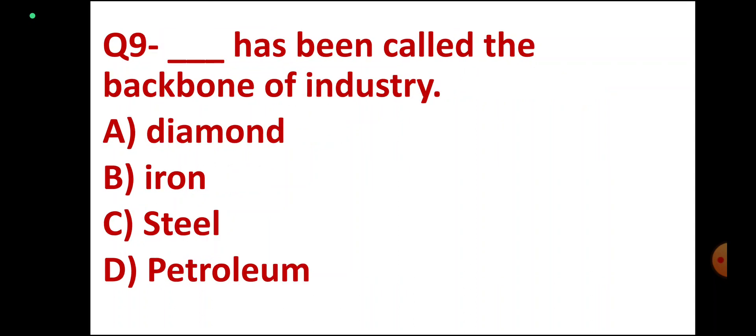Question number 9. DASH has been called the backbone of industry. Options: Diamond, Iron, Steel, Petroleum. Correct answer — sorry, Steel is the backbone of industry. Correct answer: Steel.